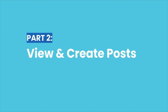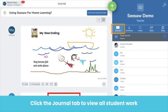Now let's get to the Seesaw basics: viewing and creating posts. There are three main ways to view the posts that students create in Seesaw. If you have a second device, you are welcome to follow along; if not, please just continue watching the video. First is the journal view. This is your default view when you log in to your teacher account. You'll see all posts from all students in the order that they are posted.